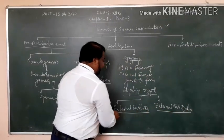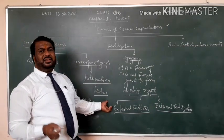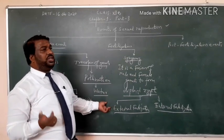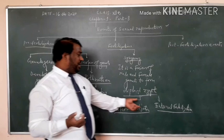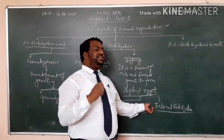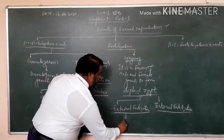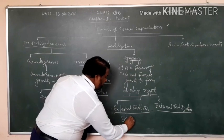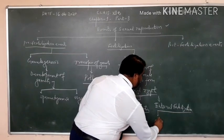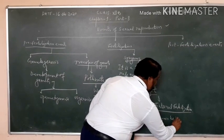In external fertilization, gametes externally meet together outside of the medium. And in internal fertilization, gametes fertilize inside the body. For external example, frog. And for internal example, human being.